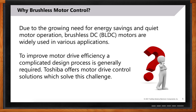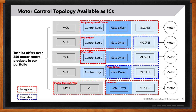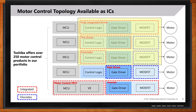Toshiba offers over 250 motor control IC products in its portfolio, because there are different types of requirements in terms of power and flexibility. For simple motion and moderate power — typically less than 100 watts — brushless motor applications can use off-the-shelf motor control drivers, which integrate the motor control logic, gate driver, and MOSFET in a single chip. This acts almost like a black box, really simplifying the task for designers.